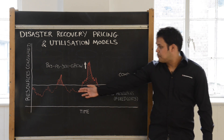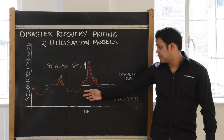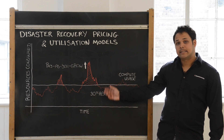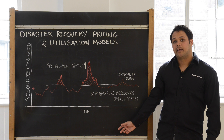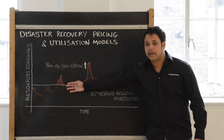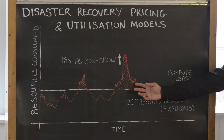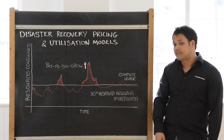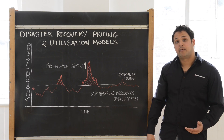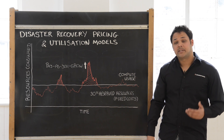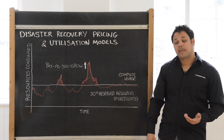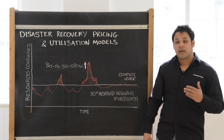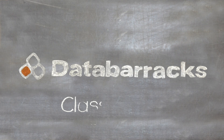So you would have a business as usual operation for your disaster recovery below the 30%, but then you have the ability to scale that compute very quickly in the event that you maybe have a single server failure or a full disaster recovery invocation, and only pay for the resource when you use it. This provides a very cost effective way for organizations to leverage the cloud without having to make the huge investments that they would have to do with co-location and physical environments for disaster recovery.